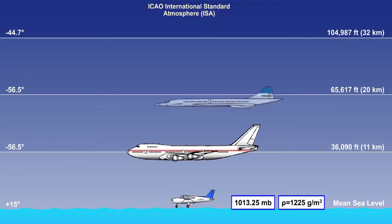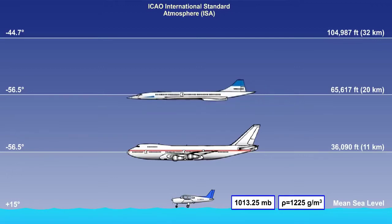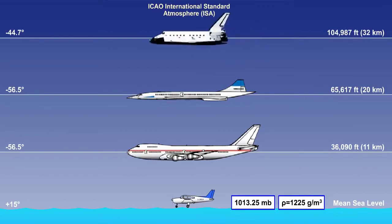Thirdly, that from 36,090 feet, or 11 kilometres, up to 65,617 feet, or 20 kilometres, the temperature is constant at minus 56.5 degrees Celsius. And finally, from 65,617 feet, or 20 kilometres, up to 104,987 feet, or 32 kilometres, temperature increases by 0.3 degrees Celsius per 1,000 feet, or 1 degree Celsius per kilometre.